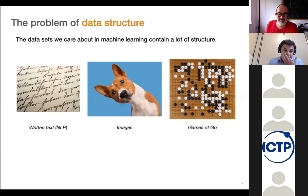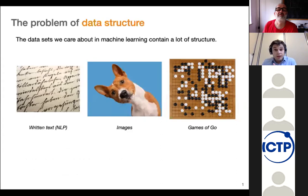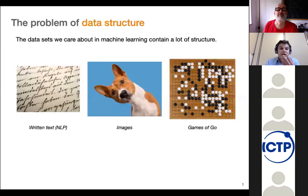The key question we set out to investigate was: if you look at the data sets that are important in machine learning — like images, natural language, games of Go — they all have a lot of structure. And if you train your network on these data sets, your aim is usually to extract some of that structure and exploit it for your downstream task. Yet why this works really well in practice is, from a theoretical point of view, only very poorly understood. So we started wondering whether and how we can analyze the impact that data has on learning in neural networks.